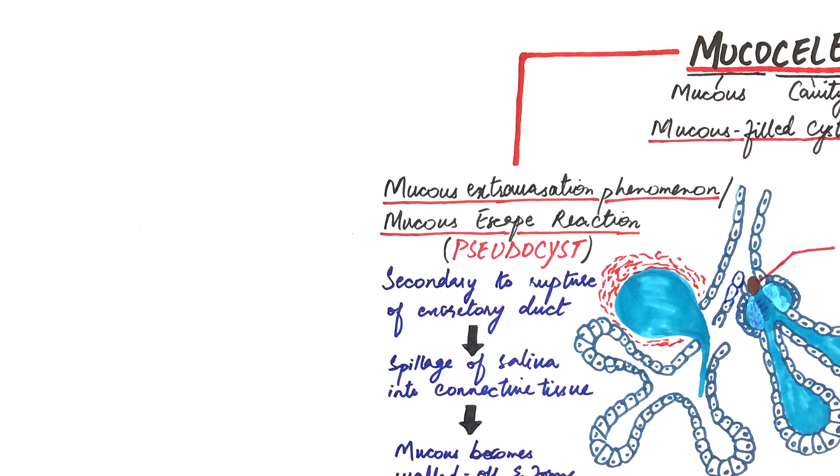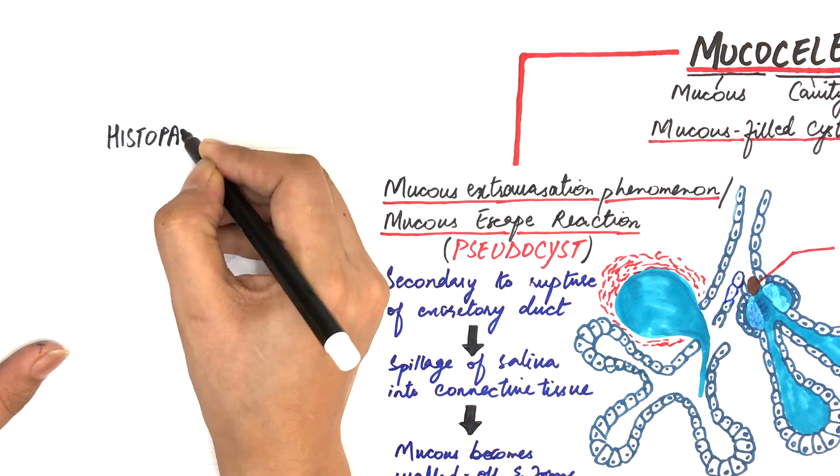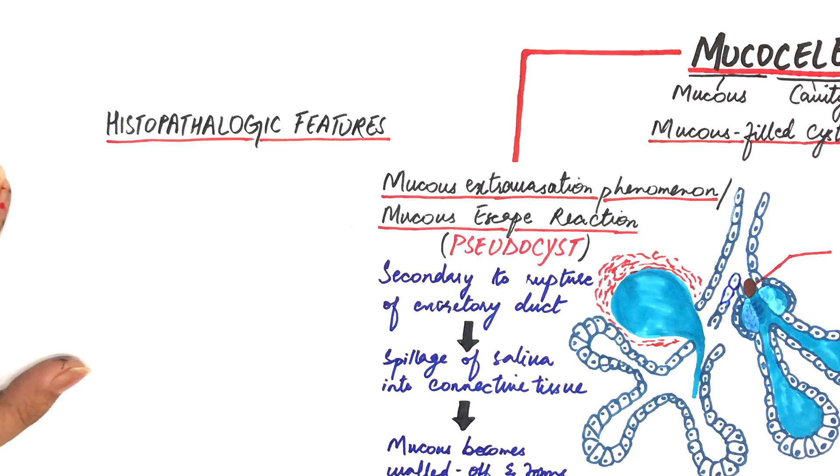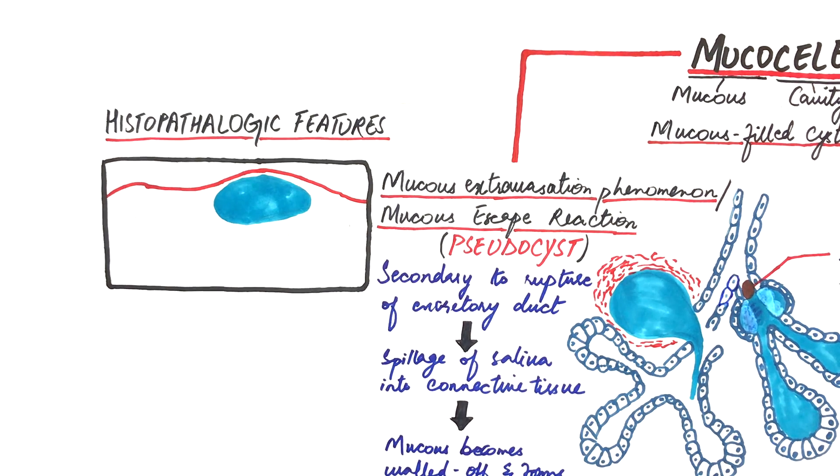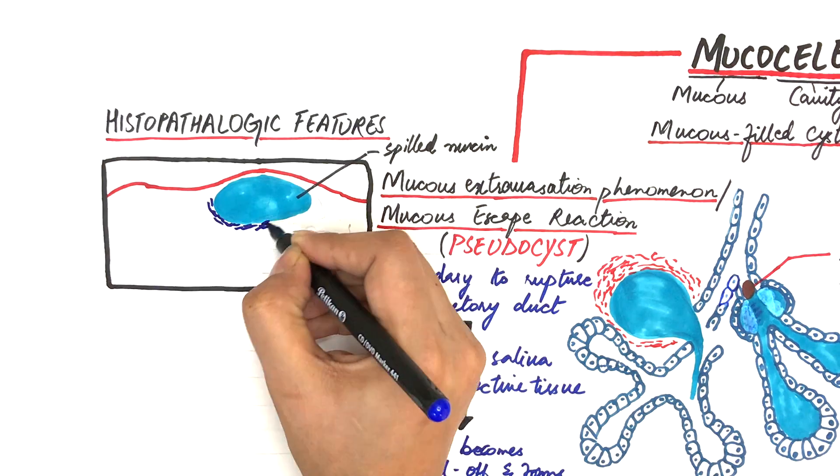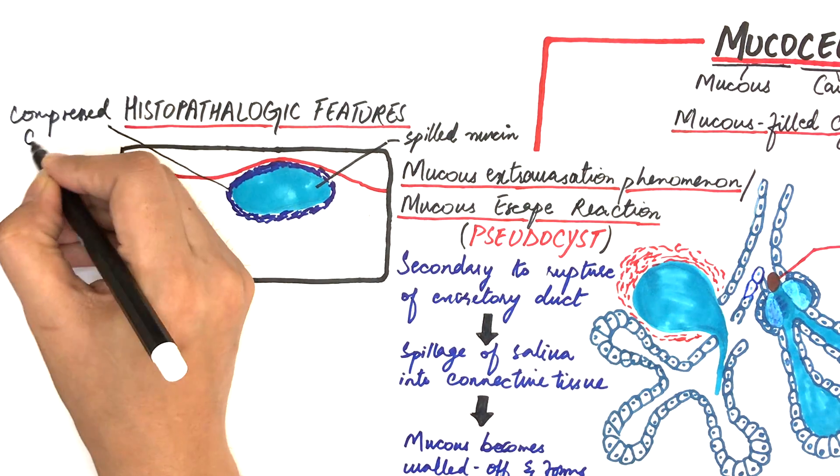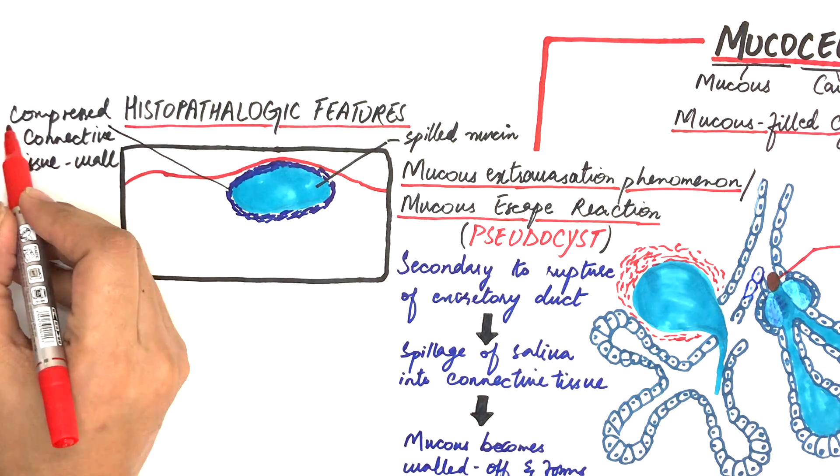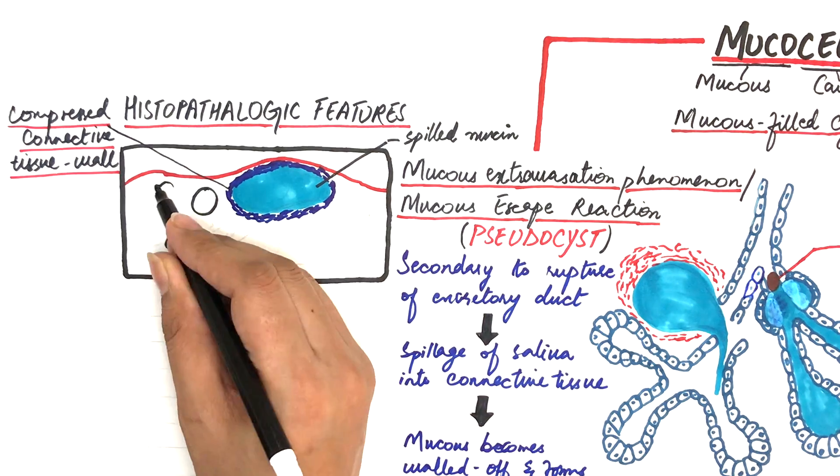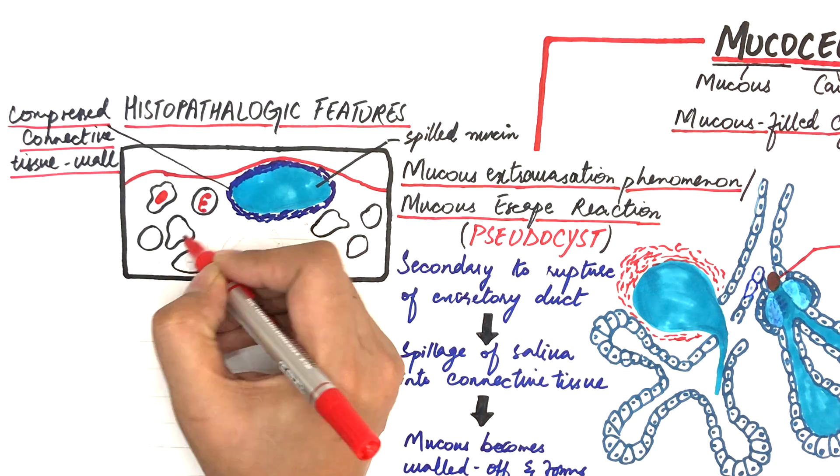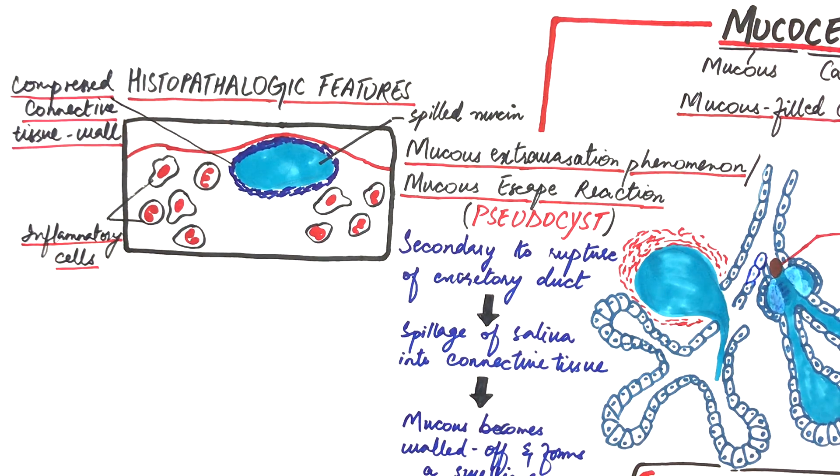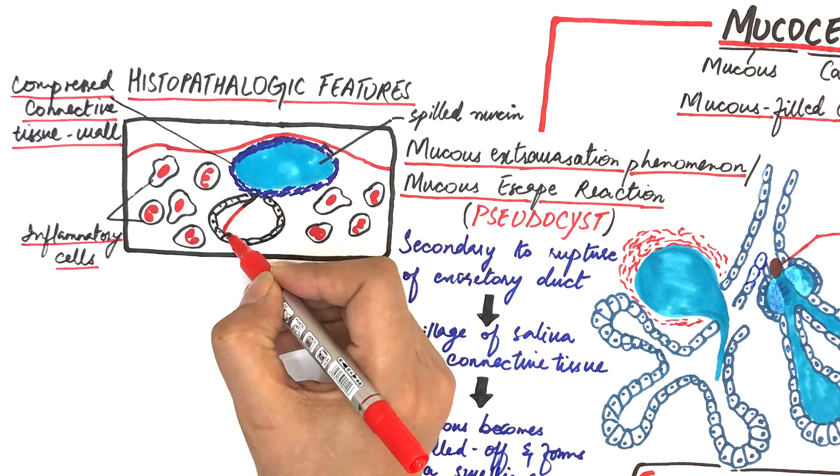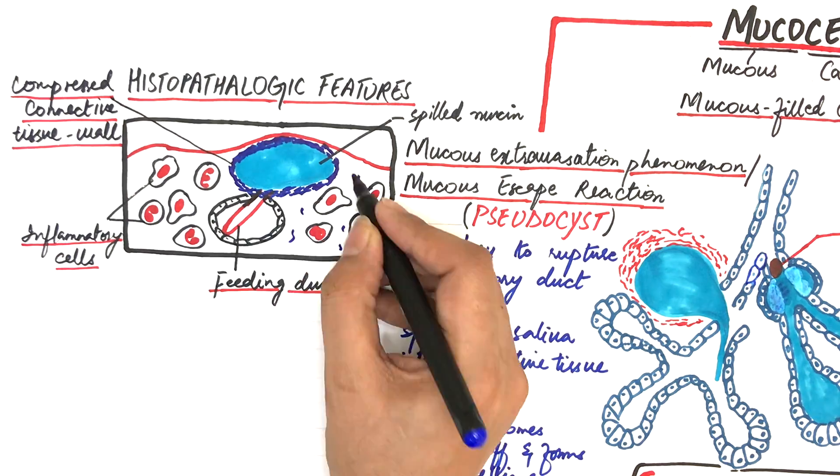Let's now talk about some histologic features for both types of mucoceles. The extravasation phenomenon shows area of spilled mucin surrounded by compressed connective tissue wall or a granulation tissue. The adjacent connective tissue shows numerous inflammatory cells like macrophages, neutrophils, eosinophils and lymphocytes. In addition, a feeding duct from an adjacent salivary gland might be seen draining within the mucin-filled cavity.